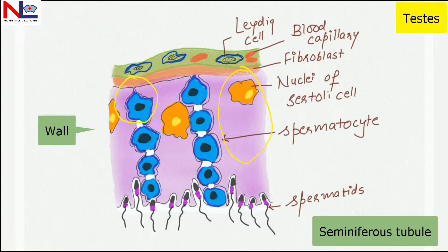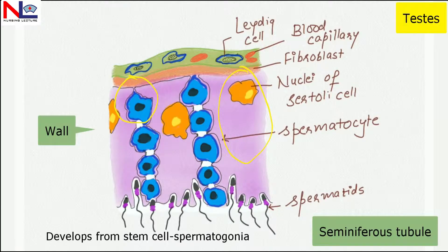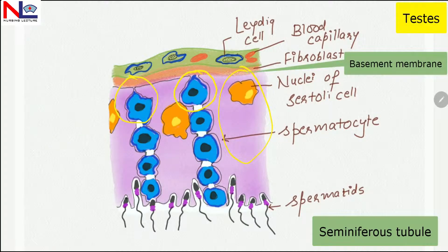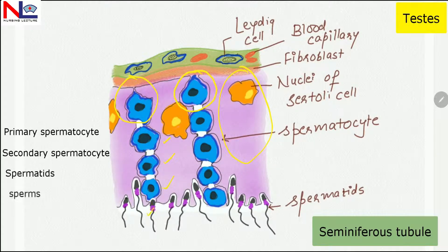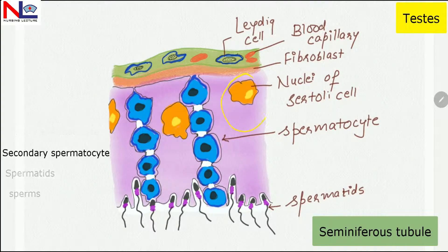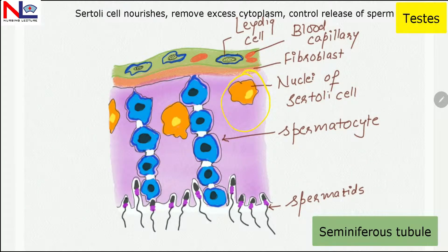The spermatogenic cells develop from a stem cell called spermatogonia, which are attached to the basement membrane. They give rise to primary spermatocytes, secondary spermatocytes, spermatids, and then to sperms. Sertoli cells nourish them, remove excess cytoplasm, and control their release into the lumen of the seminiferous tubules.